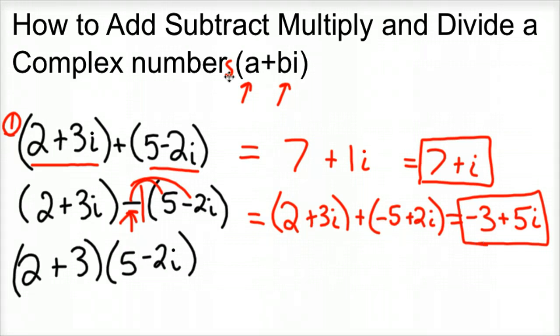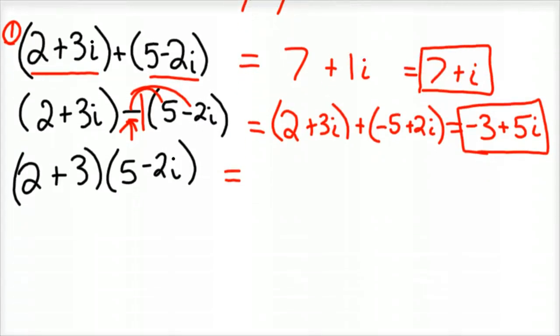Then the third one here is multiplication. We'll get to division in a second because that's a little different. But multiplication, give it a shot. Hit stop and see if you know what to do there. Because you might know intuitively if you've done any algebra at all. So with this one, you distribute it like any binomial. You know, we've got a set of binomials here. Oh, and sorry, I forgot the i there with the 3. So it's 2 plus 3i and 5 minus 2i.